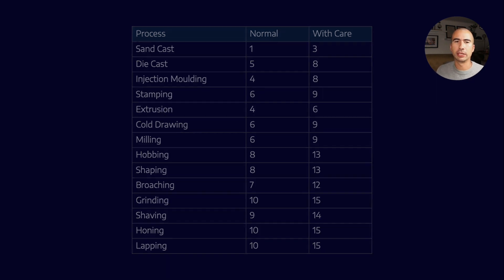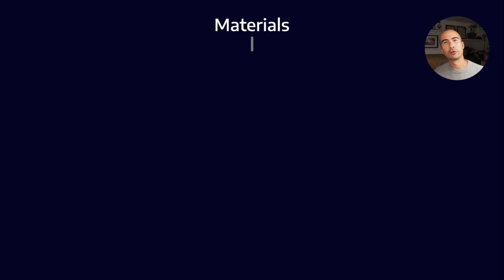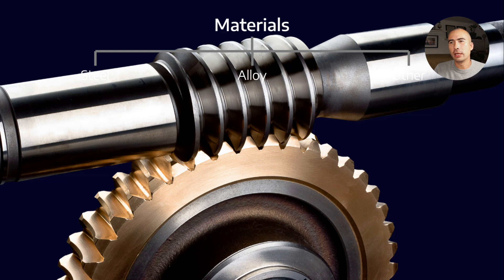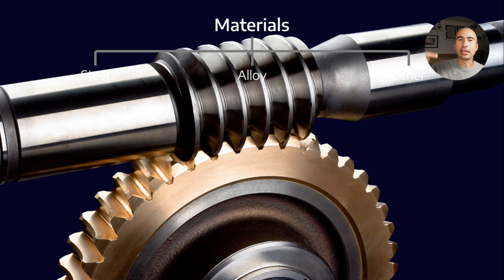Let's briefly talk about materials. Within metal gears — because some gears can be made from plastic too — you can broadly group them into three categories: steels, alloys, and others. The 'other' category includes things like the yellow metal compounds used in worm gears, where the worm wheel is often made from brass or bronze. That's because the amount of sliding that occurs between the worm and worm wheel is much greater than in other gear sets, and if you had two different hardened steels, there would be too much wear in that combination.